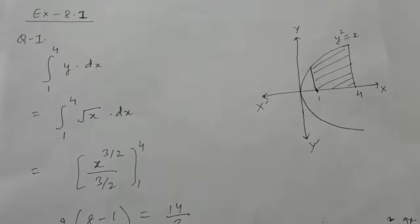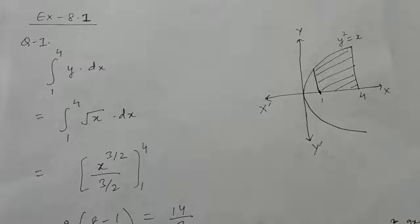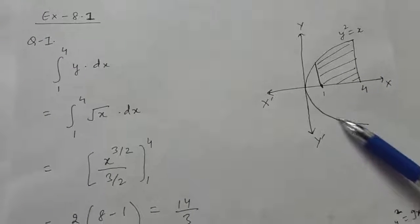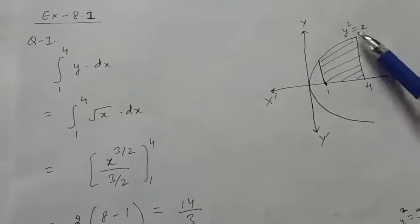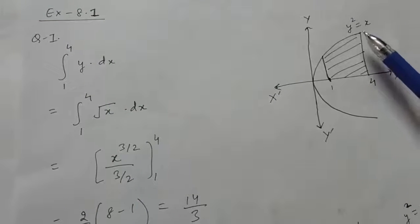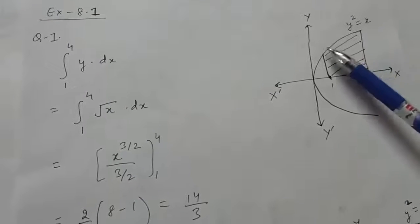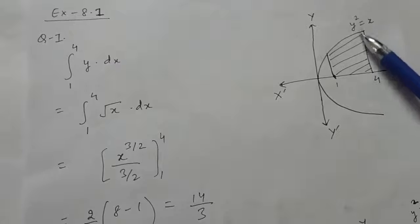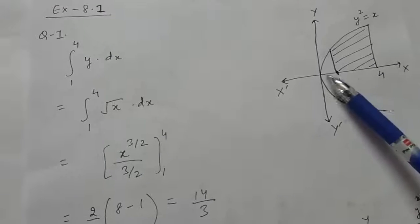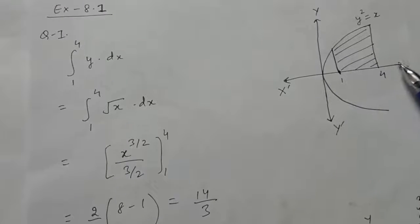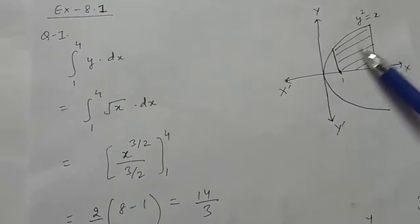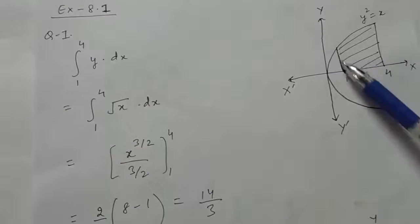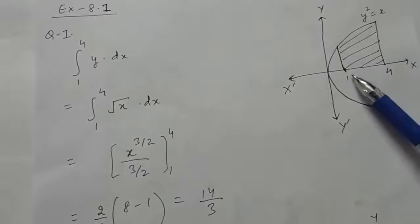First of all, make the graph. This is the graph of y² = x. You can also take the points to plot this graph. This is the line x = 1, this is the line x = 4, and this is the x-axis. So we have to find this area which is bounded by the curve, these lines, and the x-axis.